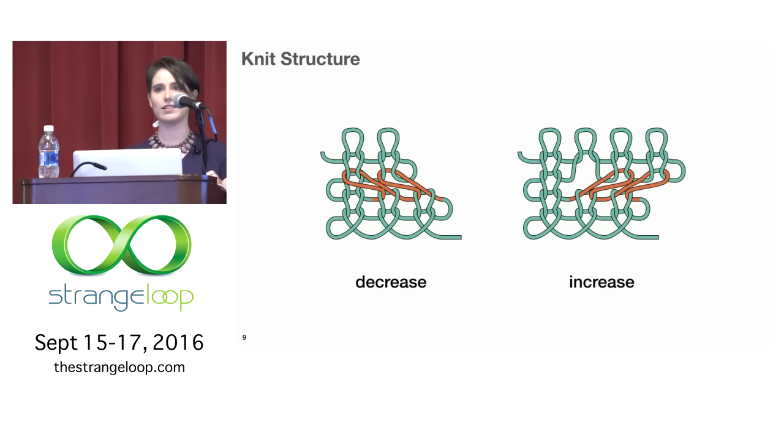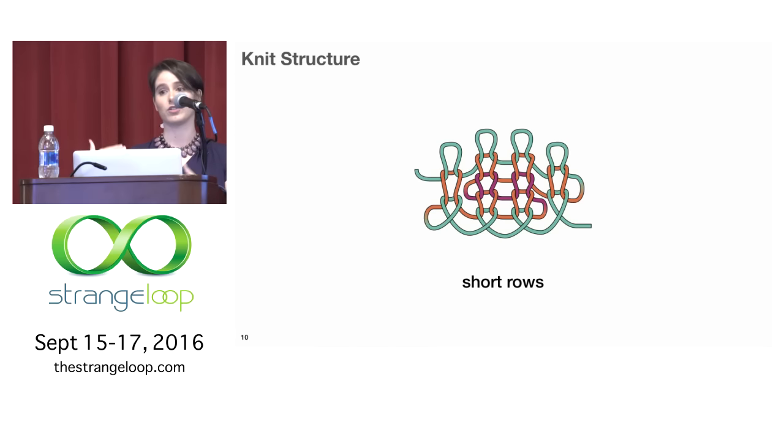So something that's really cool about knitting is because the same thread looping back on itself is what forms both the horizontal and the vertical connections, you can distort that stitch grid. If you overlap two stitches onto each other in one row and then pull just one child through them, you've decreased the number of stitches in the next row. So time flows upwards. So on the left we have a decrease and on the right we have an increase.